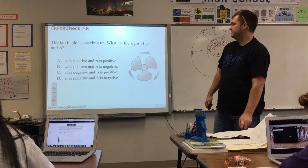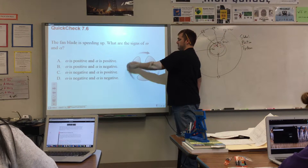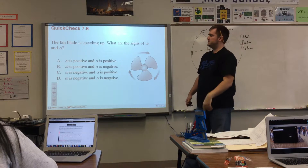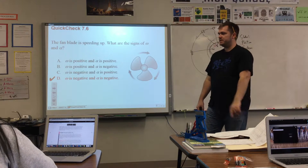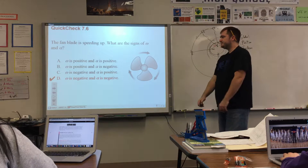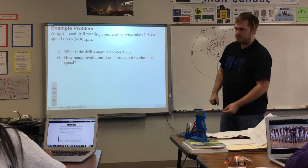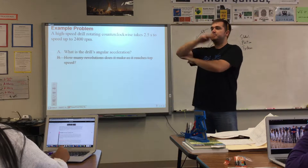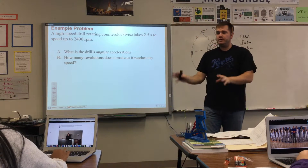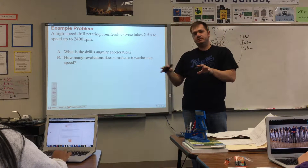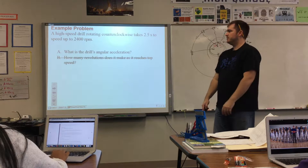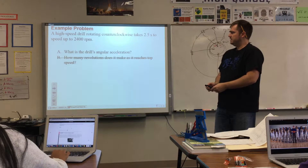For the fan speeding up: omega is still negative, and if it's speeding up in that same direction, alpha must also be negative — same sign means speeding up. It can speed up clockwise or counterclockwise. If you're unsure of directions, the clock on the wall can remind you which way is clockwise.